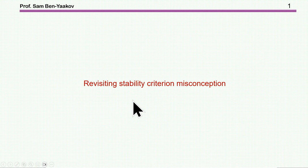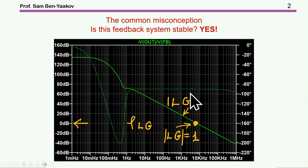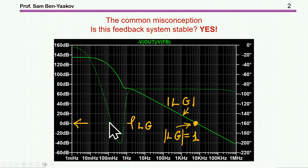Hi, I'm Sabin Yaakov. This presentation is entitled Revisiting Stability Criterion Misconception. I'm showing here a Bode plot of a closed loop system. Here is the magnitude — the solid line — and the broken line is the phase. We have a case in which the amplitude starts at low frequency with high values, then it goes down, and the phase starts at zero degrees and then goes down, lagging to below minus 200 degrees. The question is: is this system stable or not?